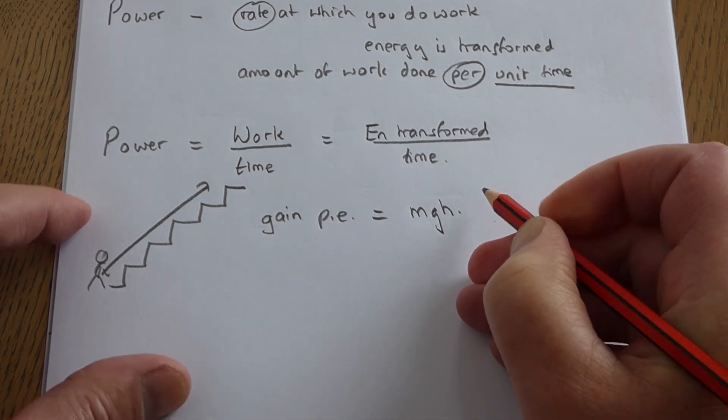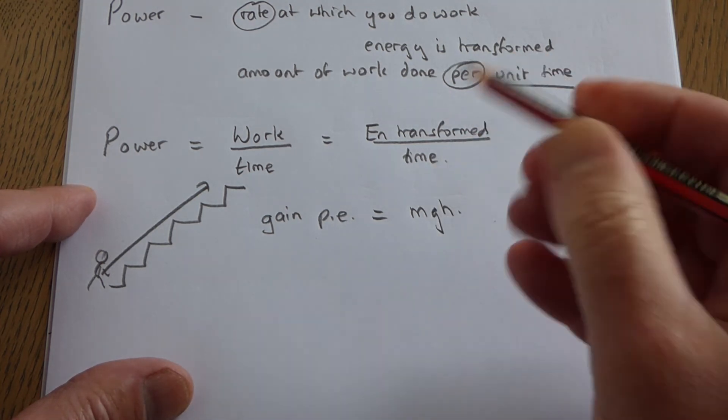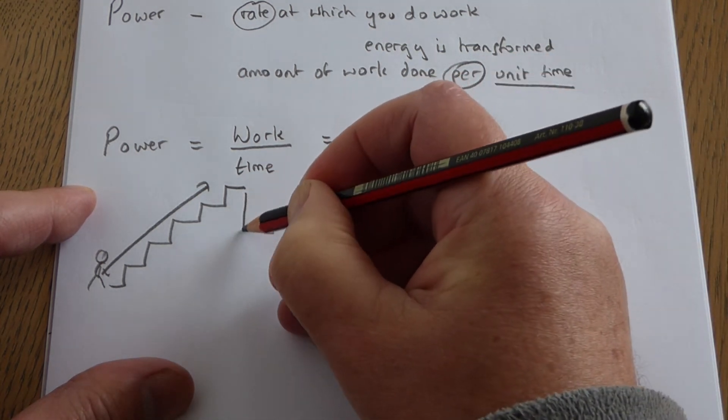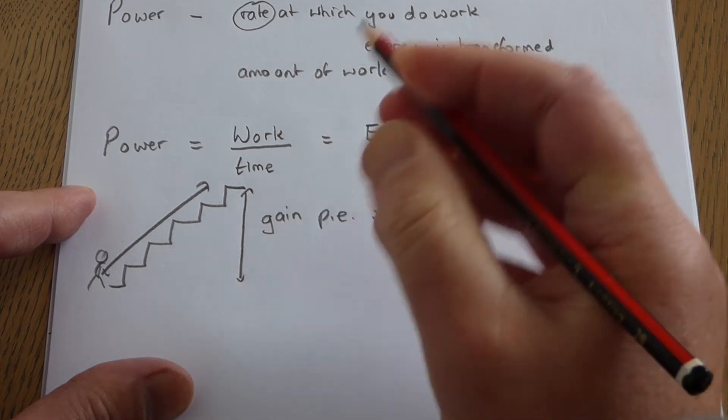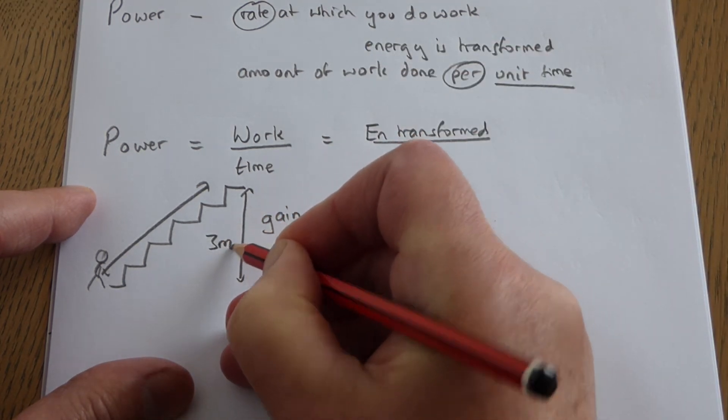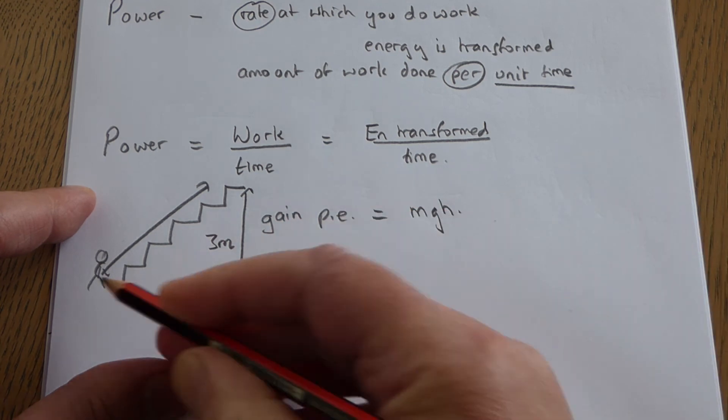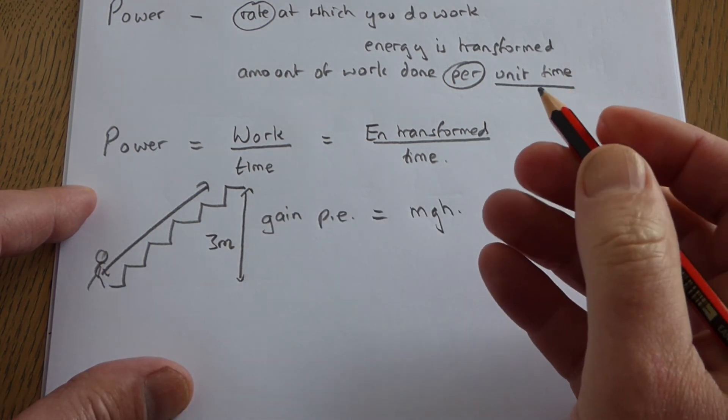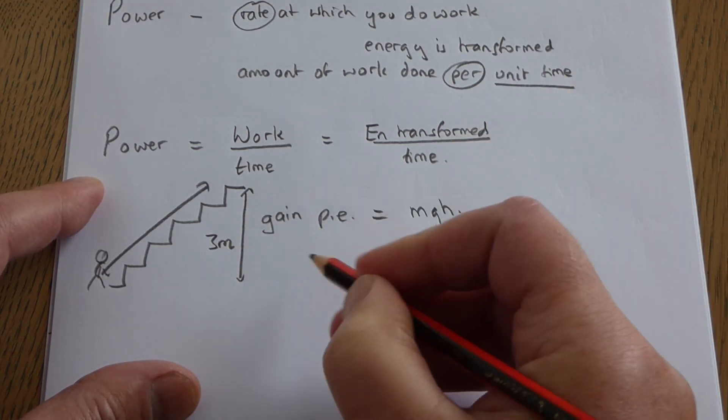Now it would be quite easy to work out how much energy you gain if you go up a flight of stairs and the vertical height, let's say, is three meters. And let's say the mass of a typical person might be 70 kilograms.